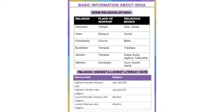Regarding literacy rates by religion: Jains have the highest female literacy rate of about 90.6%, while Muslims have the lowest female literacy rate. The lowest overall literacy rate religion is Muslim, and the highest is Jains.